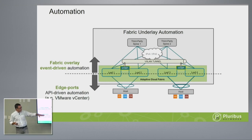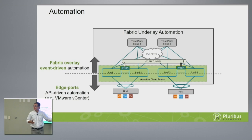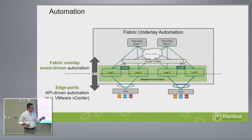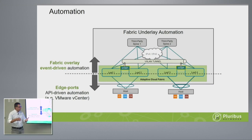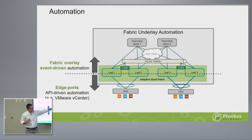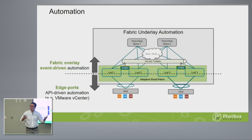The second level of automation I call edge ports automation. The classic example is vCenter provisioning VMs, attaching VMs to port groups, and then VLANs and LAGs get provisioned. This is table stakes. But the interesting part is that upon provisioning the edge ports — the VM-facing ports or customer workload-facing ports — we automate the underlay in the back end, completely transparent to the customer. The customer only has to worry about standing up a new VM or a new service.